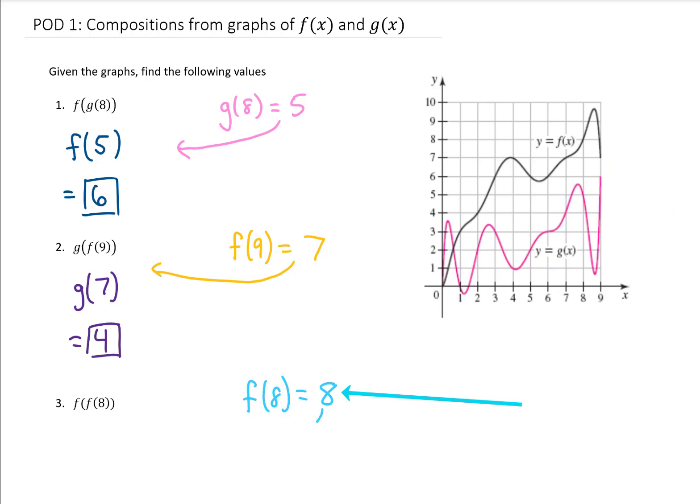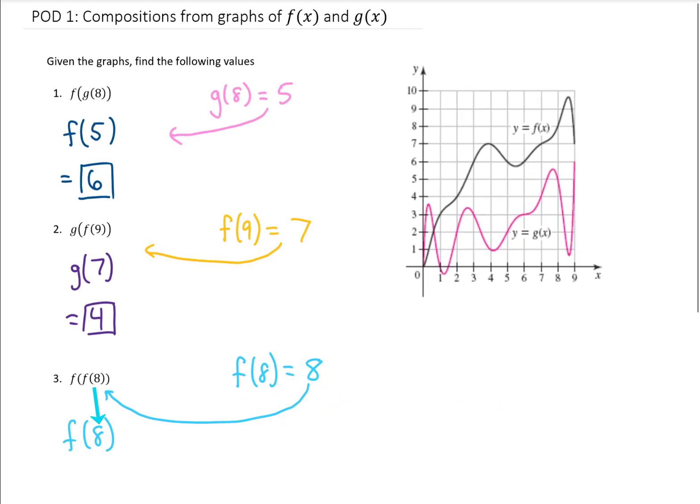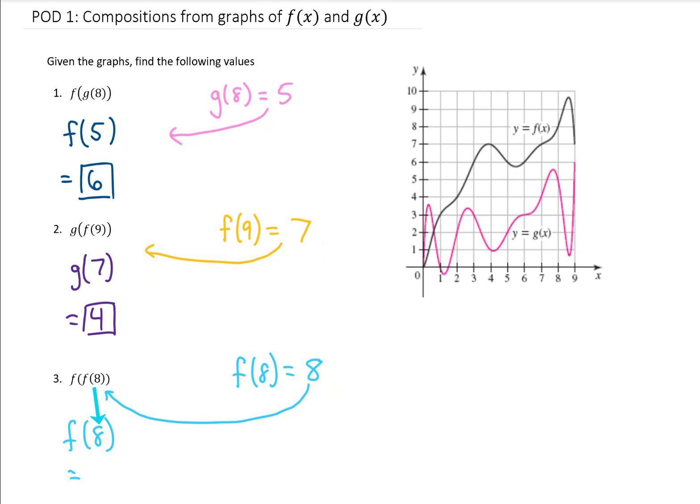So, then what we're going to do is we're going to take this 8 that we just found, and we're going to plug it in right here, and to finish this problem, we need to find f of 8. Well, we actually already found f of 8. We could go back to the graph and look one more time, but we're going to find that the final answer for this problem is 8.